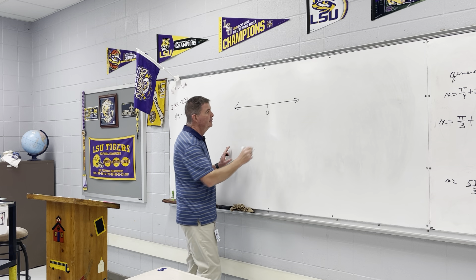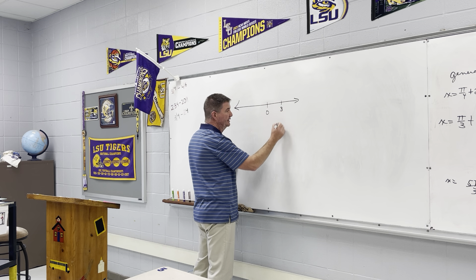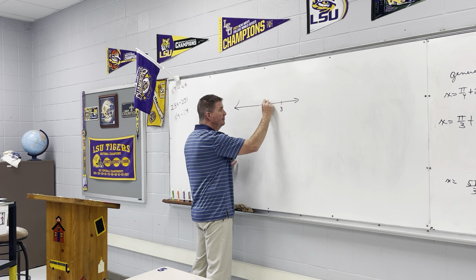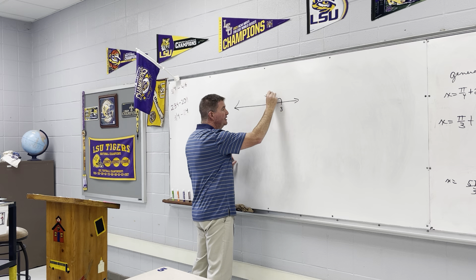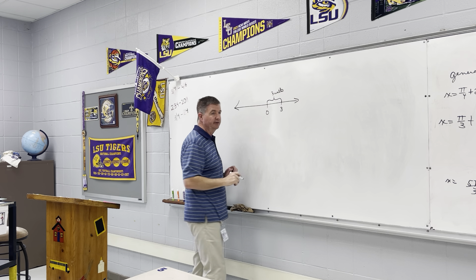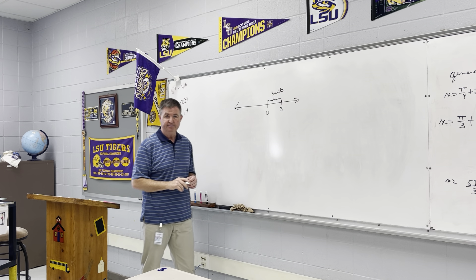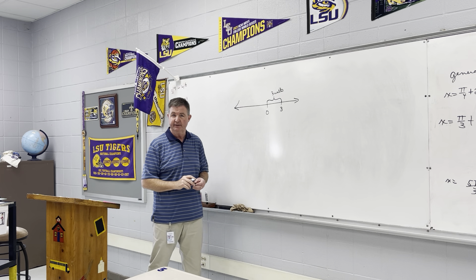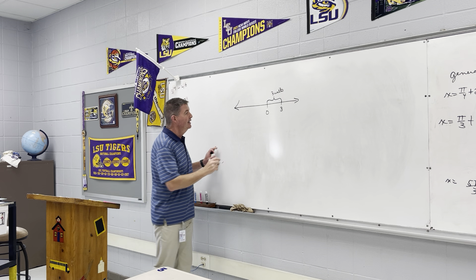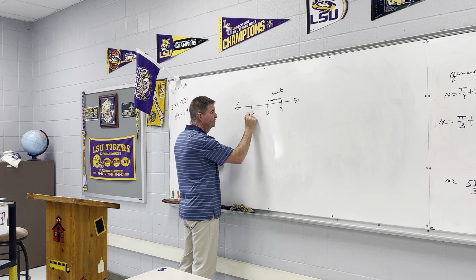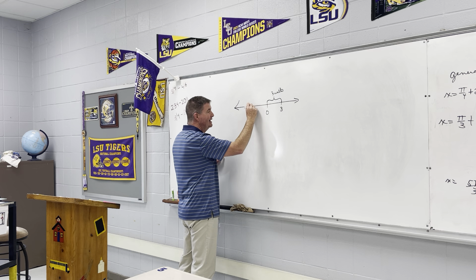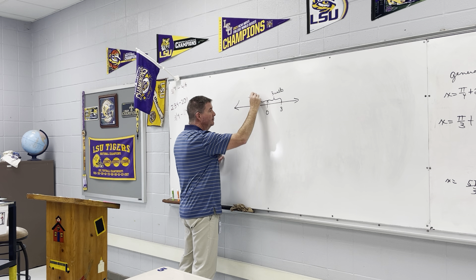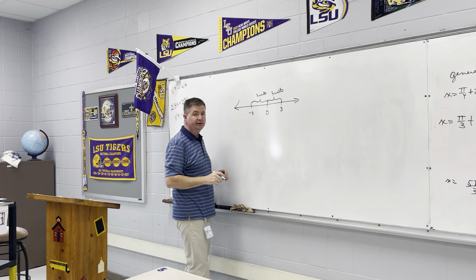So if I talk about the number 3, the number 3 is 3 units from 0 on a number line, so the absolute value of 3 is 3. But if I look at negative 3, negative 3 is also 3 units from 0.